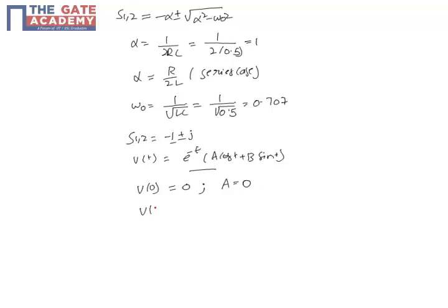Now v of t will take the form e power minus t B sin t. We know that current through a capacitor equals C dv by dt. The initial current, as I have just explained, will be 2 amperes. All the current will be passing through the capacitor.